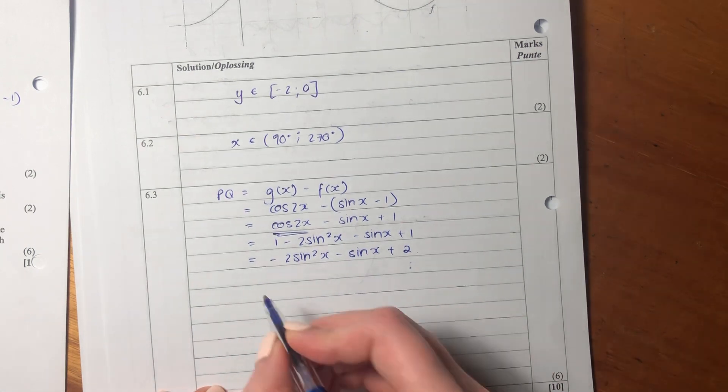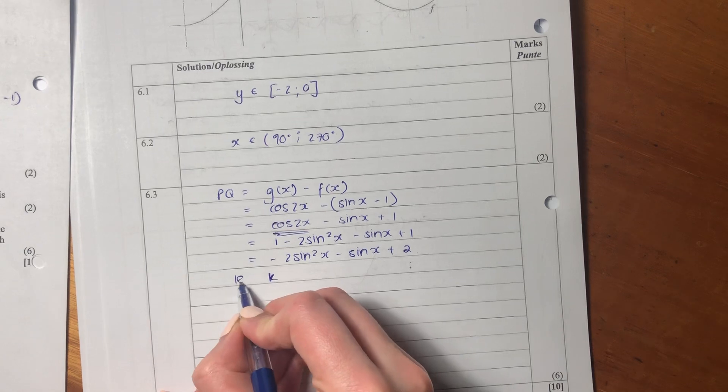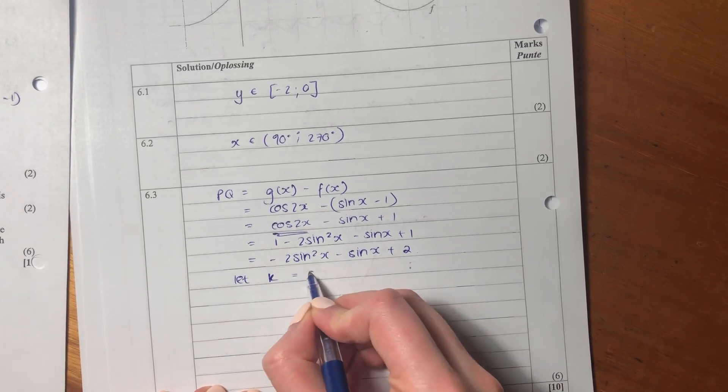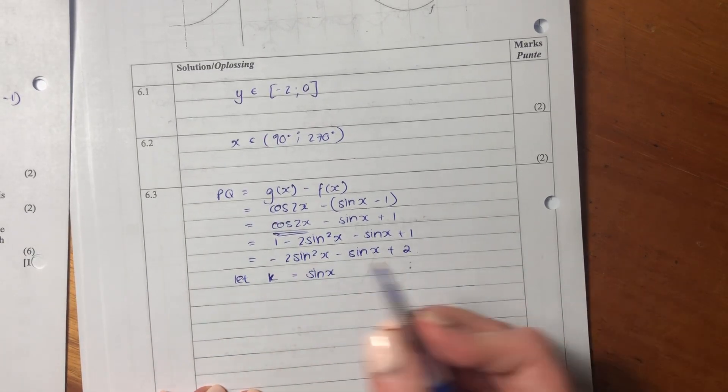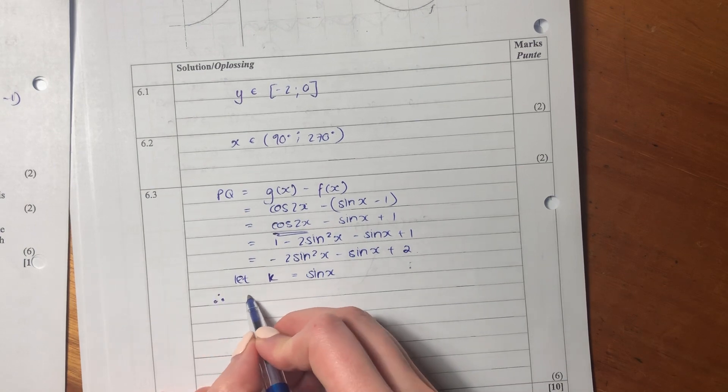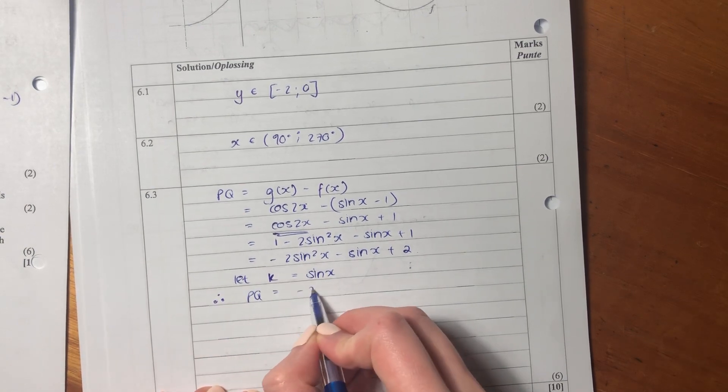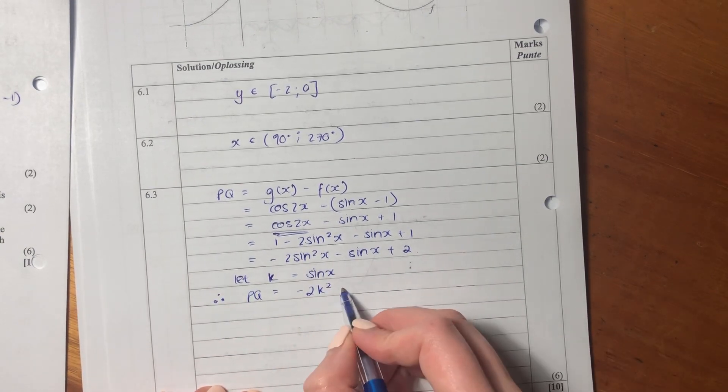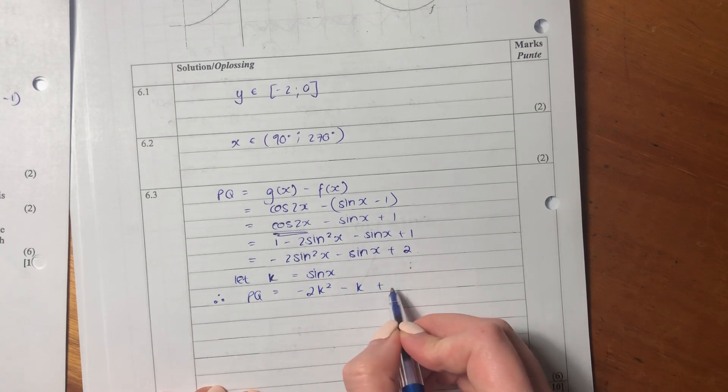Let's do this. Let's use our k method. So we're going to say, let k equal sin x. Therefore, pq is negative 2k squared minus k plus 2.